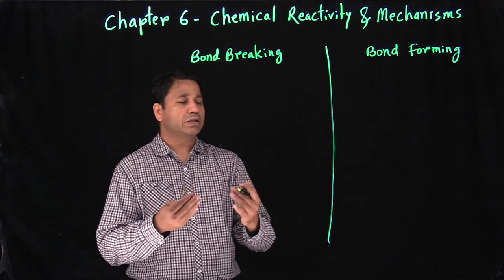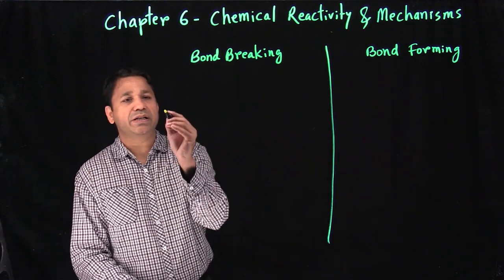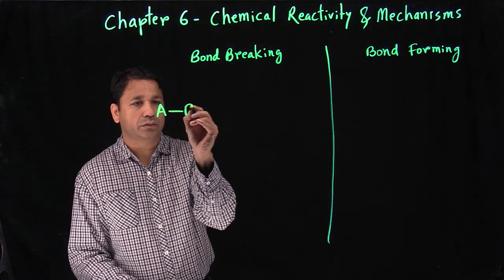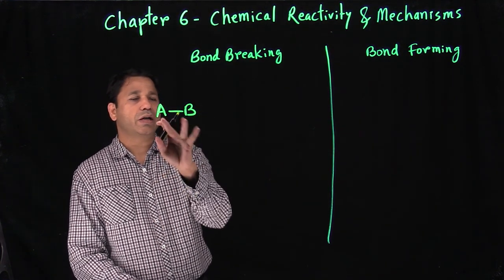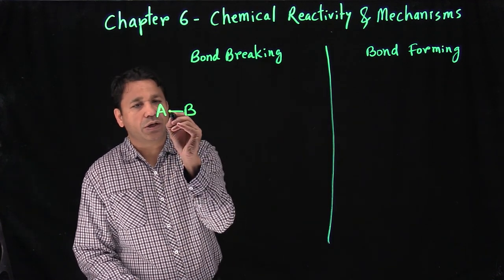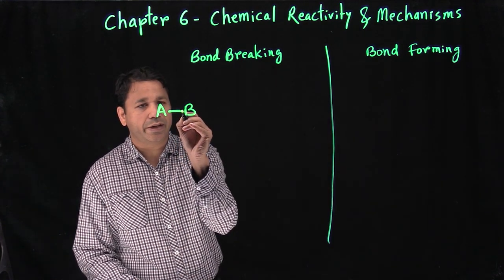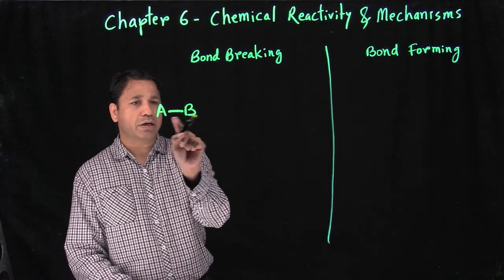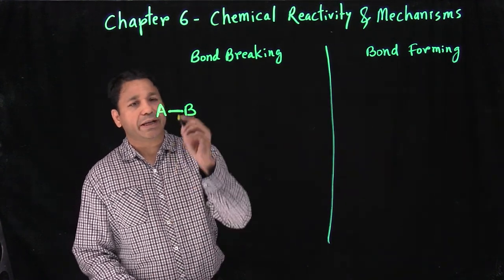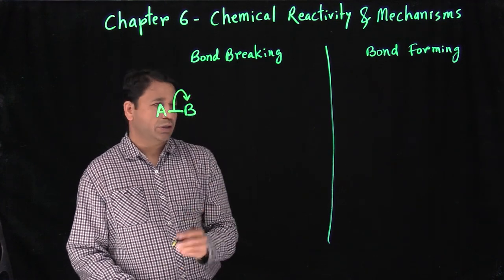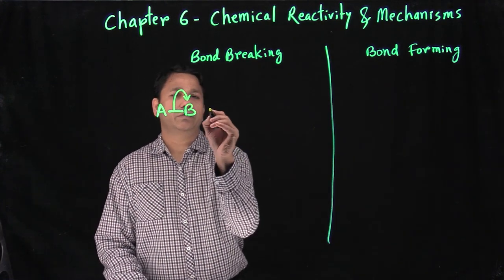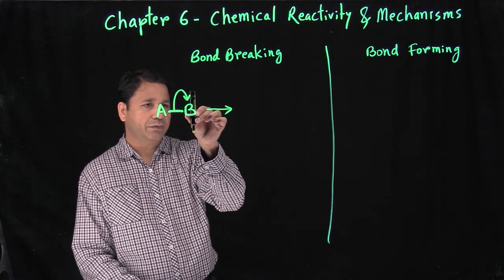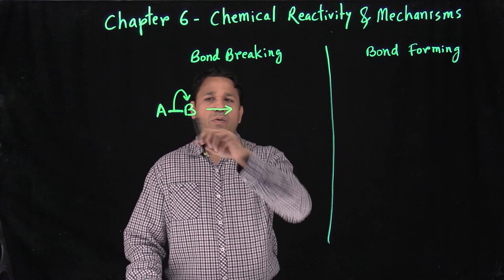So what are the different ways we can actually break a bond? A bond means two electrons. Let's say you have a bond between A and B — that's an electron pair connecting the two atoms together. So A and B are connected with a bond, and I can take those two electrons and shift them onto B.